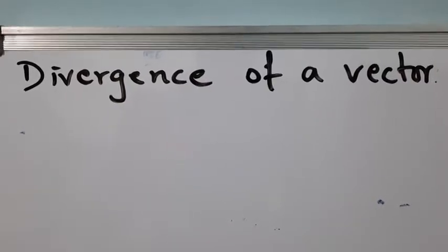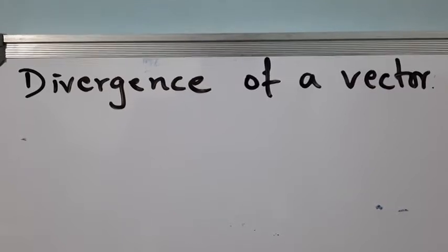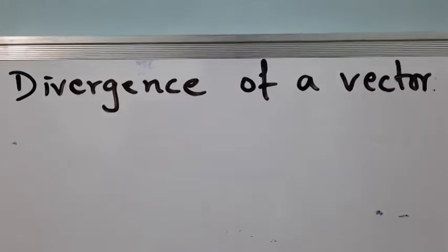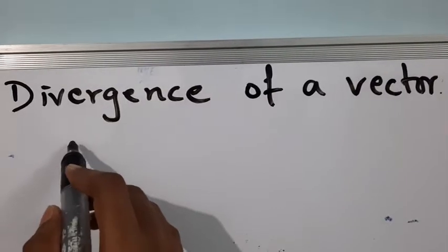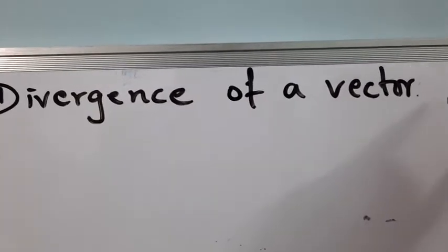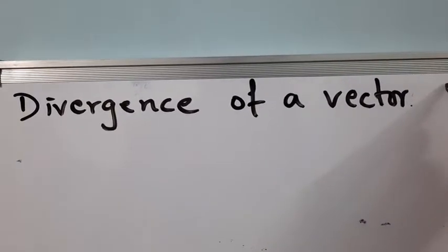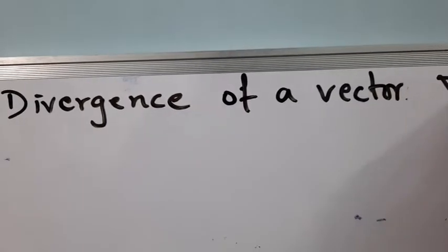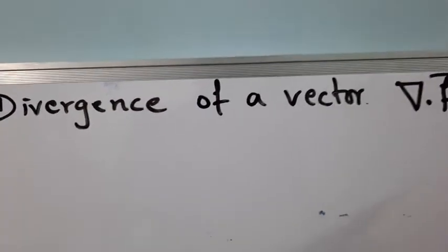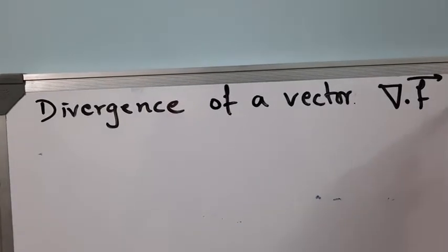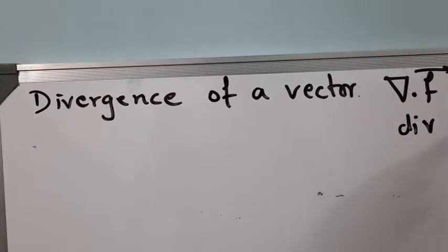Hello students. In this video we will be discussing about divergence of a vector. Divergence of a vector is denoted by del dot vector f, or divergence of vector f.